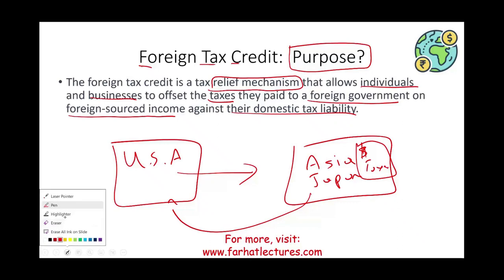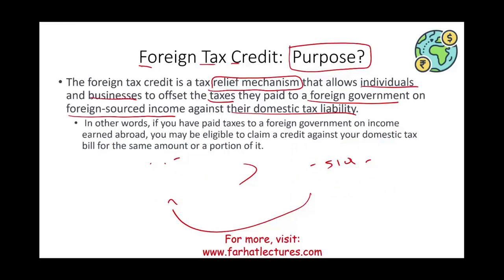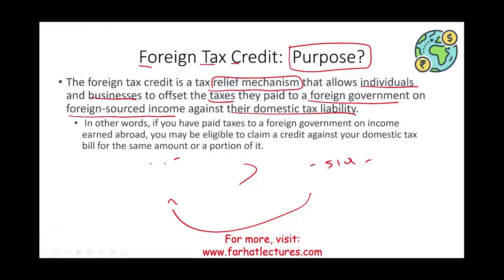The overall idea is this: if you have paid money to a foreign government on income earned abroad, you may be eligible to claim a credit. There are conditions — the country cannot be on the terrorist list, and the US must have some sort of mutual agreement with them. You pay taxes over there, and you can claim a credit on your domestic tax bill or get some of the taxes paid back. There is a limitation.